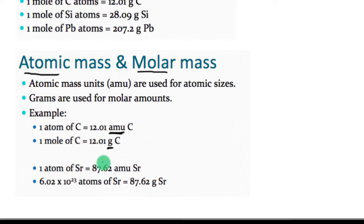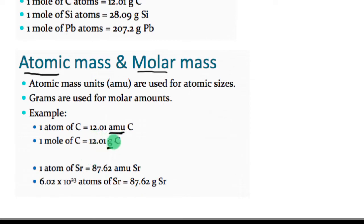The same applies to strontium: one atom of strontium is 87.62 atomic mass units, dealing with an individual atom. But if I have Avogadro's number of atoms — one mole — then I have 87.62 grams of strontium. This happens because both the atomic mass unit scale and the molar mass scale are set relative to carbon-12 as the reference, so since they share the same reference, the numbers are the same with different units.